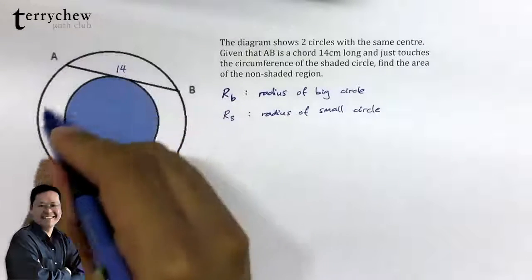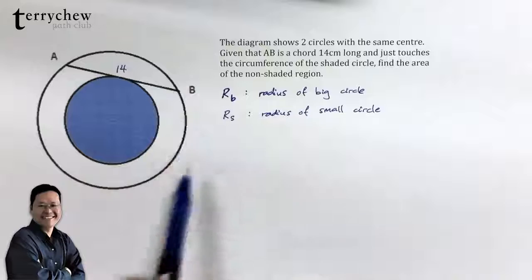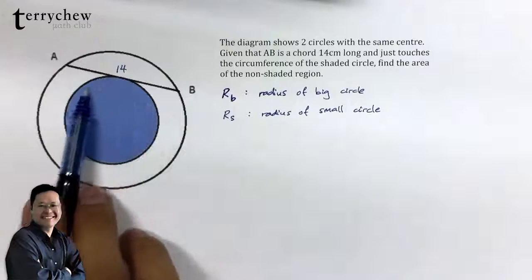Observe that the area of the unshaded region is the area of the big circle minus the area of the small circle.